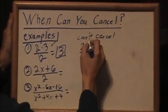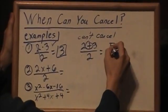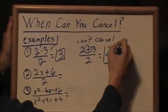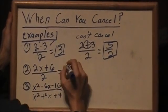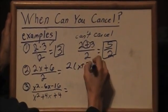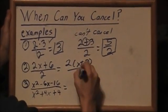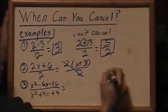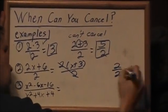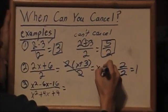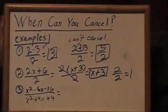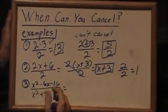Tell me, when, when, when can you cancel? Tell me, when can you cancel? When factors are the same, we cross out to get one. Write down what's left and then you're done. That's when, that's when, that's when I can cancel. That's when I can cancel.